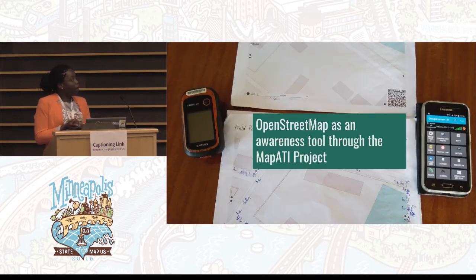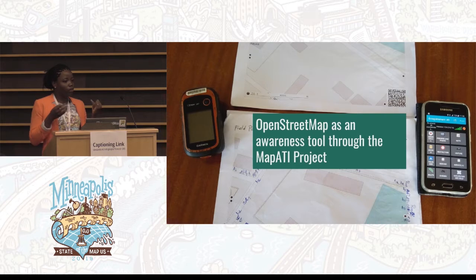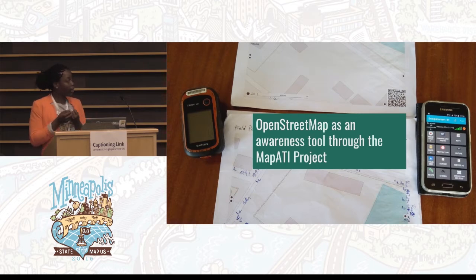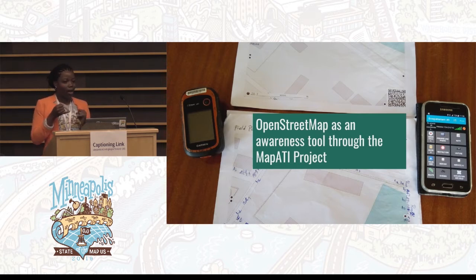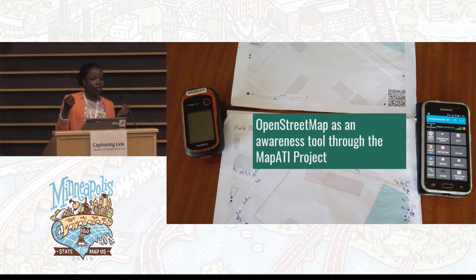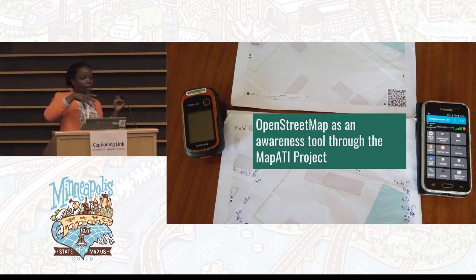We ask how we can use OpenStreetMap to fight this problem. We must collect data on trees and green spaces. By this data, we can do geospatial analysis and see where we have many trees and where we don't have many trees.